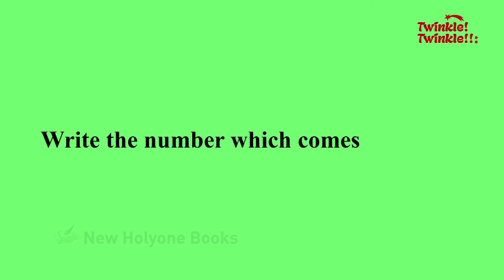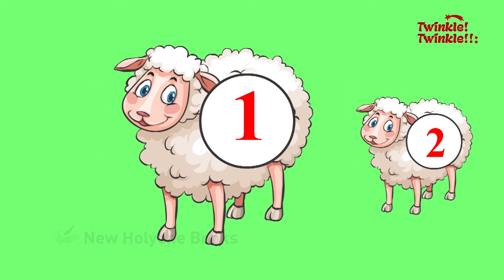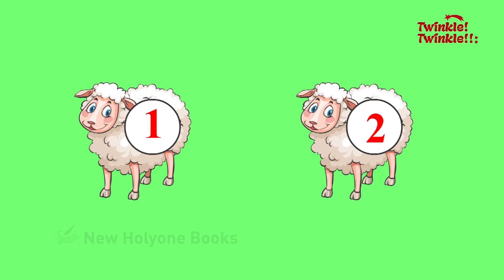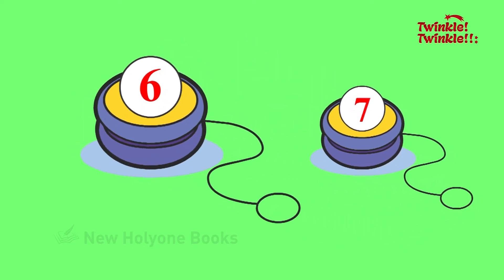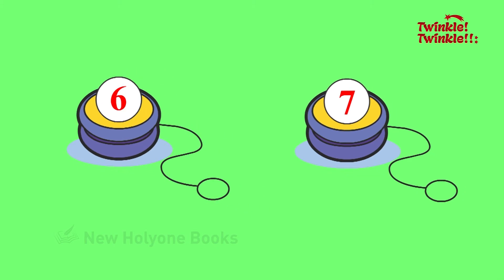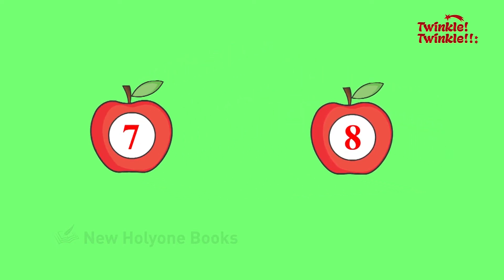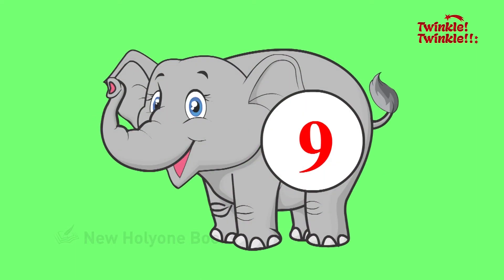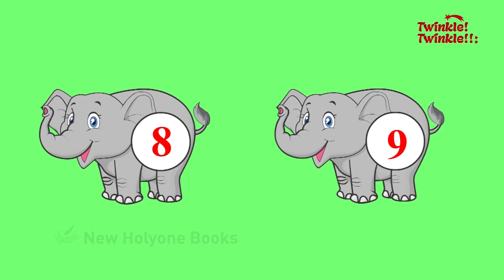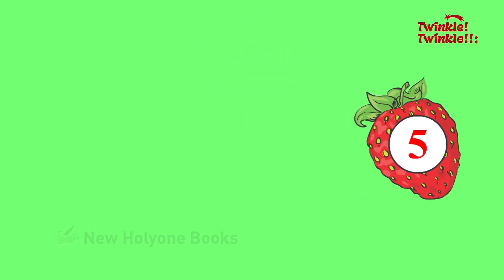Write the number which comes just after. 2 — 2 comes after 1. 7 comes after 6. 8 — 8 comes after 7. 9 — 9 comes after 8. 5 — 5 comes after 4.